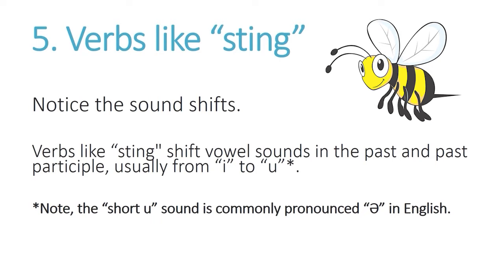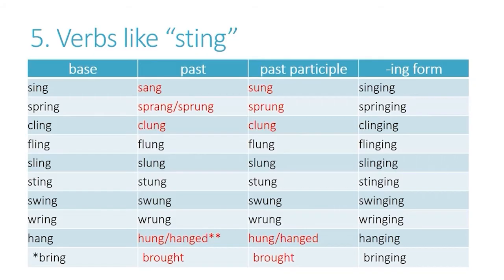The short U sound is commonly pronounced 'uh' in English. Let's look at some examples. We'll start with the verb 'sing' — this is one we mentioned before, and we're going to let you see it again to show you the comparison of these different kinds of words. With 'sing,' it changes in the past and changes again in the past participle: sing, sang, sung.